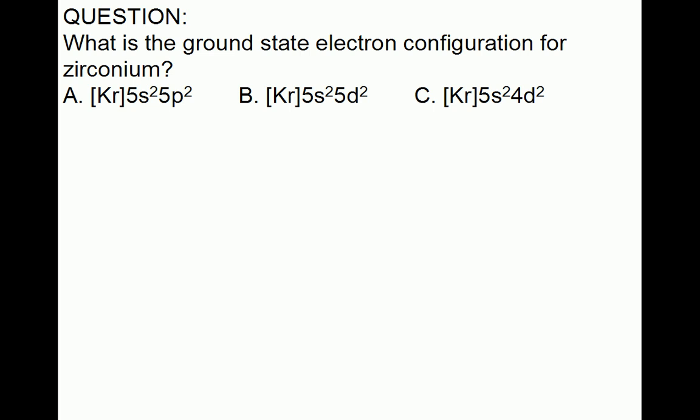What is the ground state electron configuration for zirconium? A. Krypton core 5s2, 5d2. B. Krypton core 5s2, 5d2. Or C. Krypton core 5s2, 4d2.